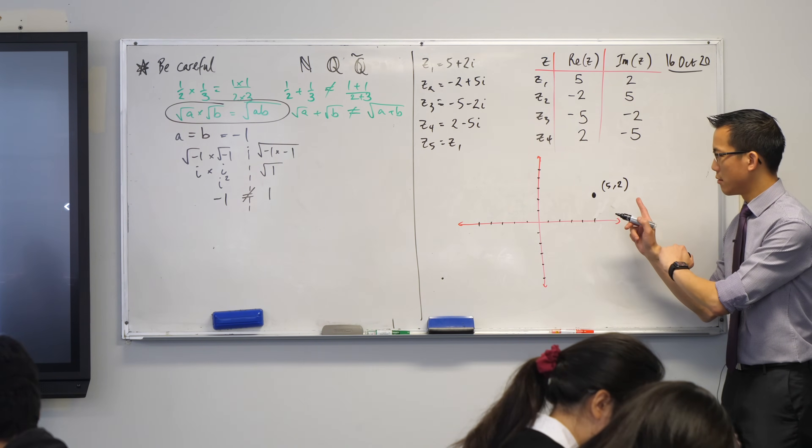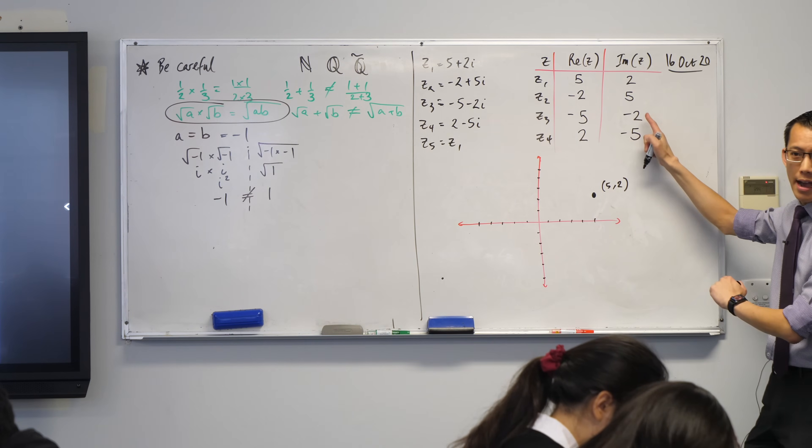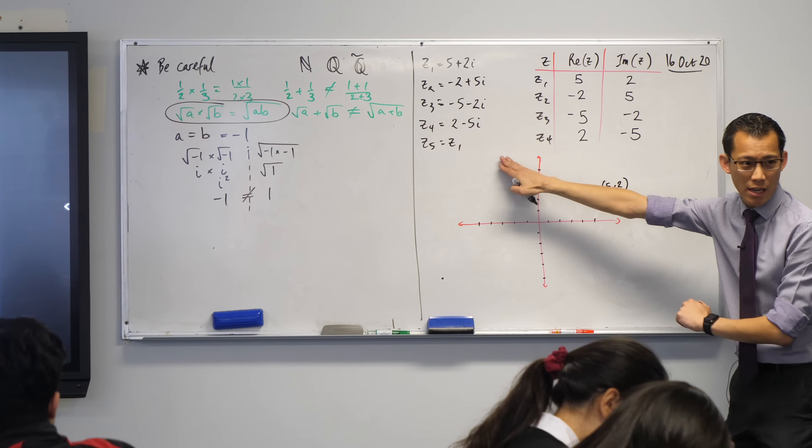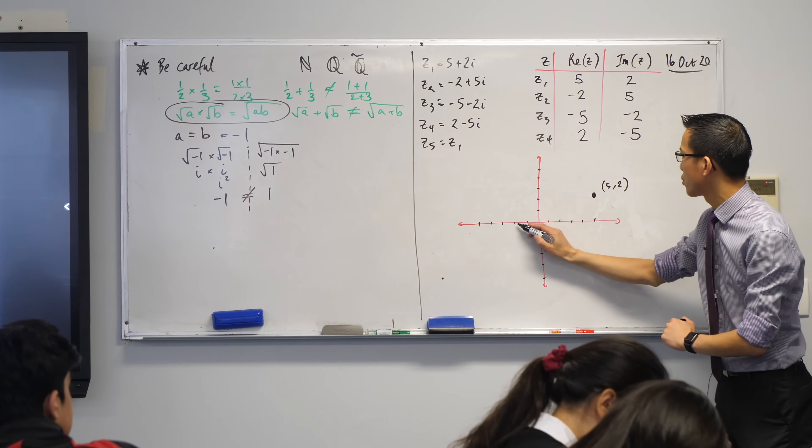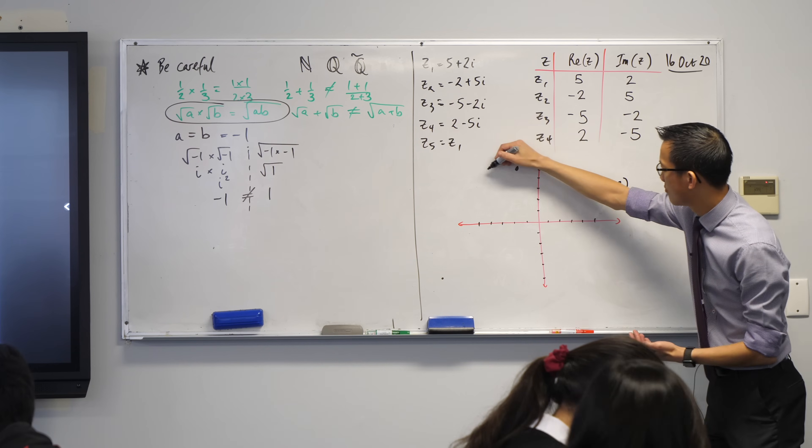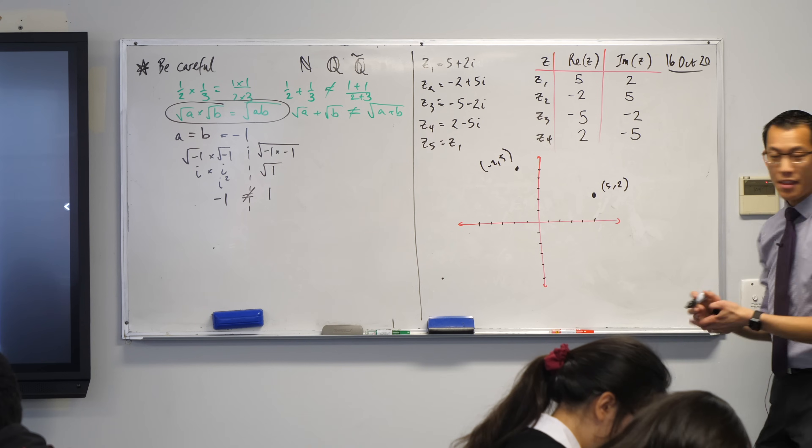First number, over here. Where's the second number? Negative two five. That's going to be, point to it. Where's it going to be? It's going to be up here, right? So I'm going to go negative two comma five. So about there-ish. Negative two comma five. And then I'm just going to keep going around.